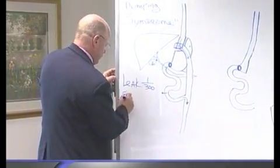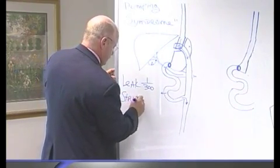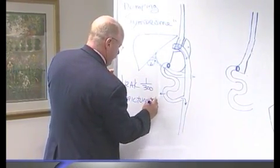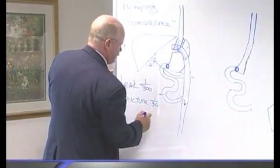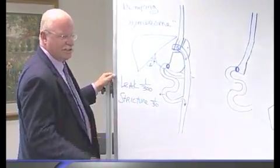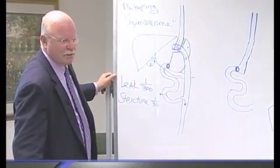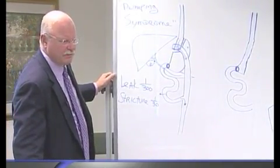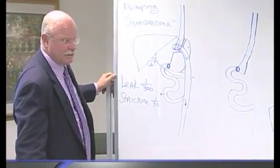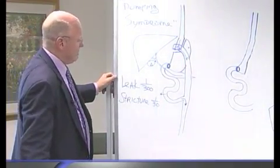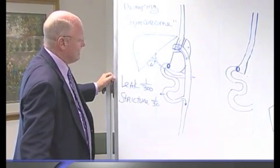So when that happens, we call it a stricture. Probably about 1 in 30, 1 in 50 cases. Usually happens about 6 to 8 weeks out when you're just trying to experiment with solid foods and nothing feels. You can't make that jump back to solid foods. And then we can usually take care of it with a single endoscopy. Very uncommon to have to do it twice.